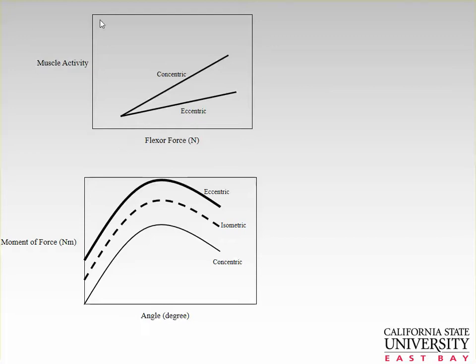Another way to look at this is through muscle activation, or EMG activity — which we'll measure in a few weeks in lab — versus the force. At a constant force, which contraction has more muscle activation: eccentric or concentric? You can see here that at the same flexor force, concentric needs more muscle activation than eccentric.